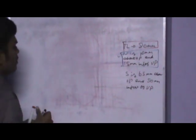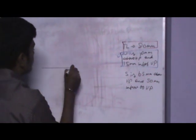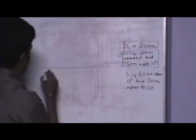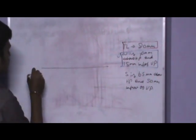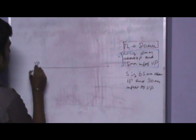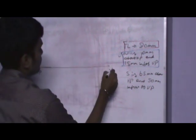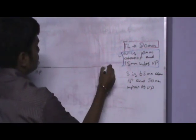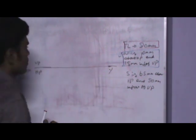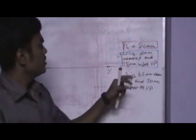Let me draw the horizontal plane and vertical plane. This is HP. This is VP.